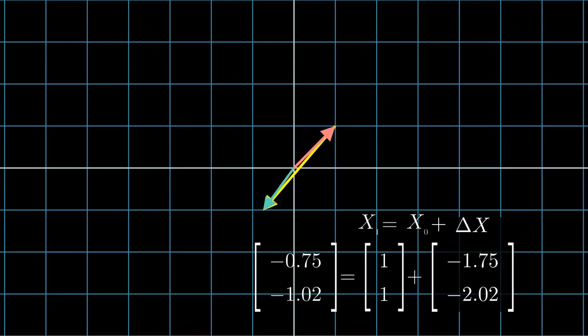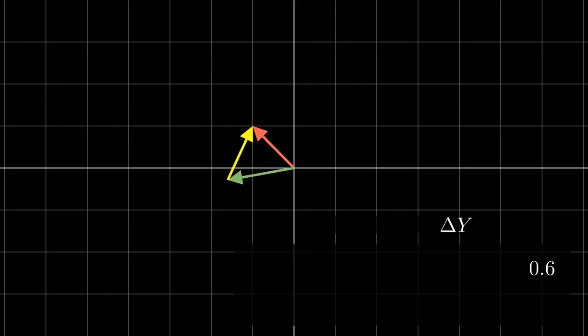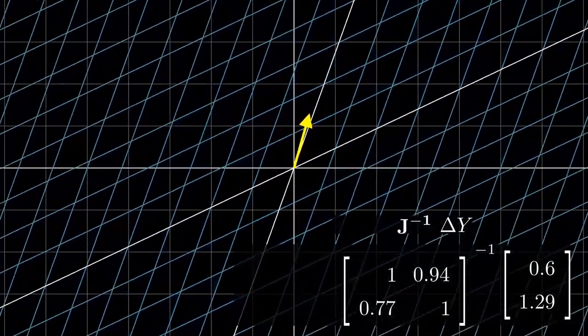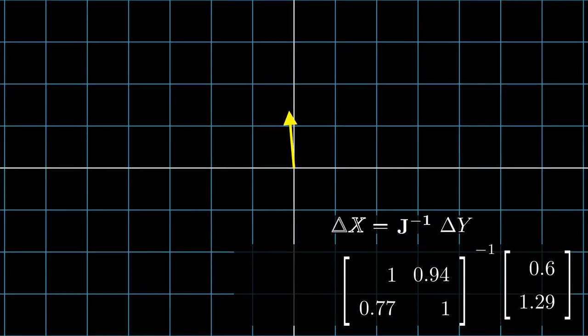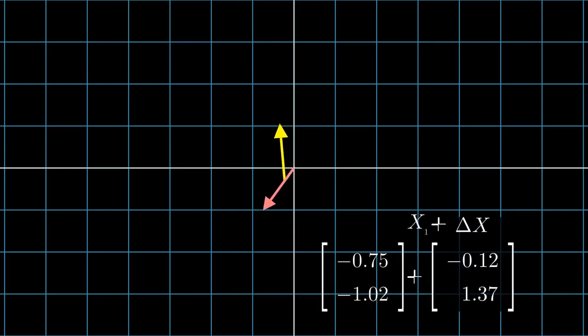Now, x1 becomes our new assumption. And we repeat the same process. Find f of x1. Find delta y. Perform the linear approximation by finding the Jacobian. Then, apply its inverse to find the correction factor delta x. And add it to the previous assumption.